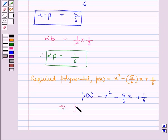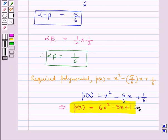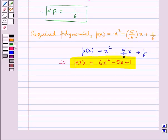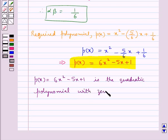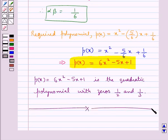This gives us P(x) equal to 6x² minus 5x plus 1. So, P(x) = 6x² minus 5x plus 1 is the required quadratic polynomial with zeros 1 upon 2 and 1 upon 3. This completes the session. Hope you have understood the solution for this question.